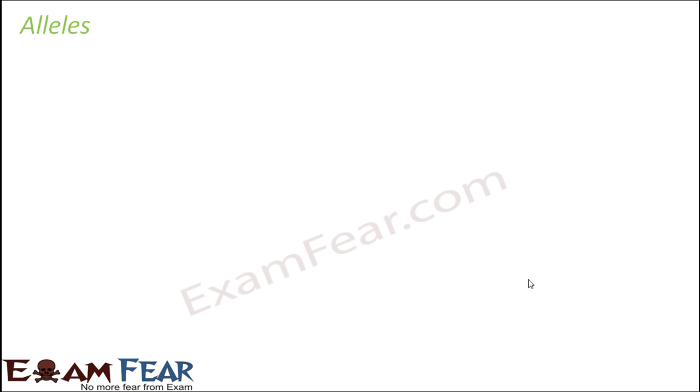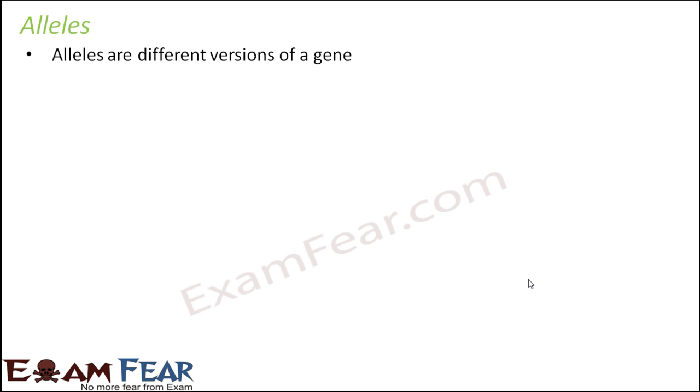Before we talk about the various patterns of inheritance, let us talk about the very basic term for genetics, and that is alleles. The basic term for genetics would always be a gene because all the information which defines your characteristics is contained in the gene. But when we talk about a gene, it becomes very important to talk about alleles, because alleles are the different versions of a gene. Students often understand genes but do not understand alleles, so let us try to understand alleles in a slightly different way.